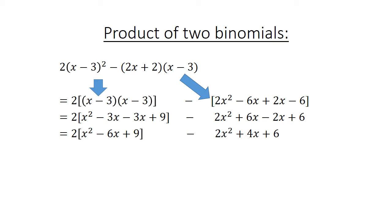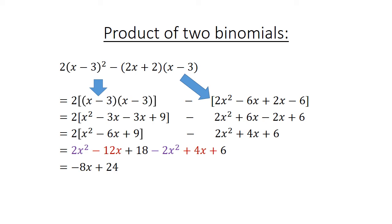Minus 2x squared. Simplifying the like terms: plus 6x and negative 2x equals plus 4x plus 6. Expanding fully: 2x squared minus 12x plus 18 minus 2x squared plus 4x plus 6. Collecting like terms: 2x squared minus 2x squared equals 0, negative 12x plus 4x equals negative 8x, and plus 18 plus 6 equals plus 24.